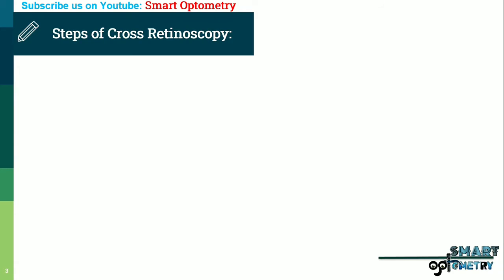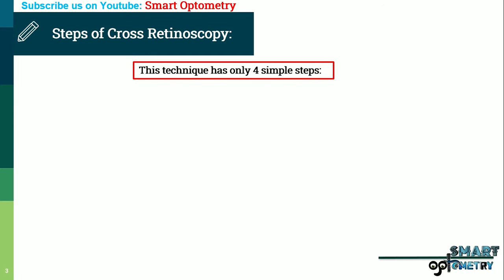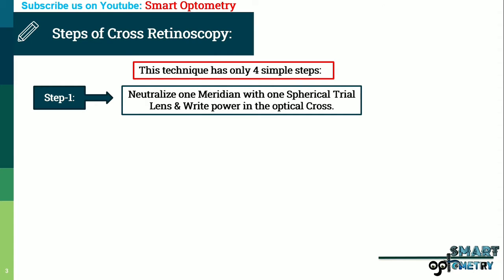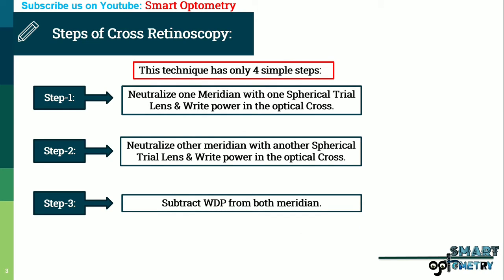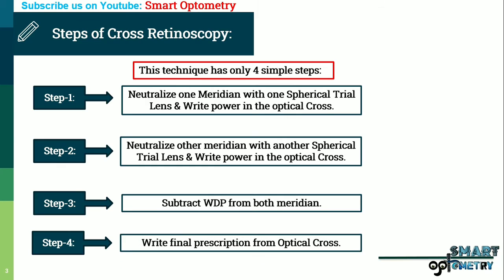Steps of cross retinoscopy. This technique has only four simple steps. Step 1: neutralize one meridian with one spherical trial lens and write the power in the optical cross. Step 2: neutralize the other meridian with another spherical lens and write the power in the optical cross. Step 3: subtract the working distance power from both meridians. Step 4: write the final prescription from the optical cross.